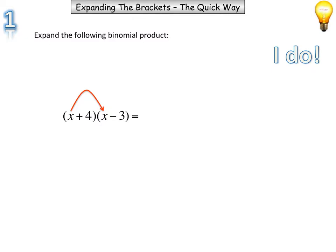So the quick method says that we look at this first term multiplied by this term. The first term again multiplied by the second term in the second brackets. And that will give us x times x, which is x squared. x times negative 3, which is negative 3x.